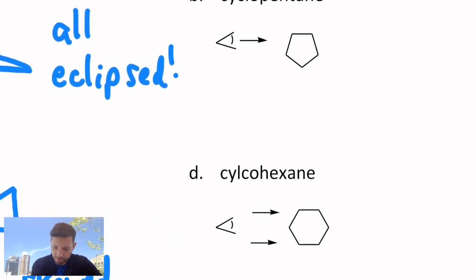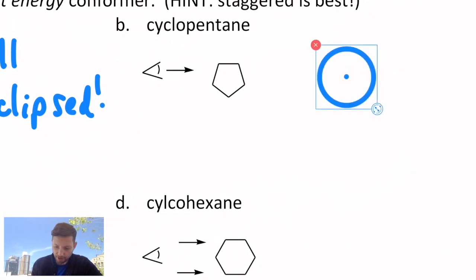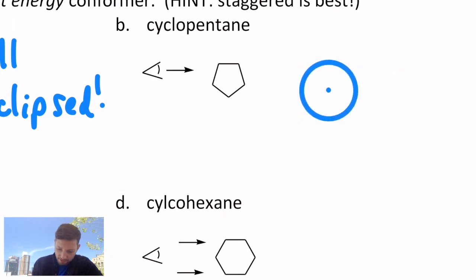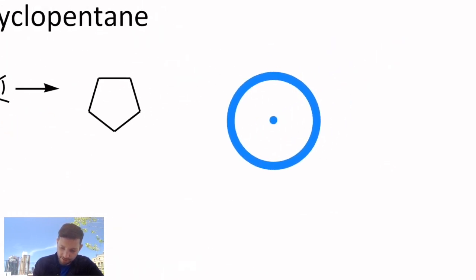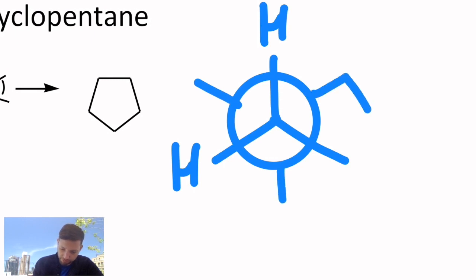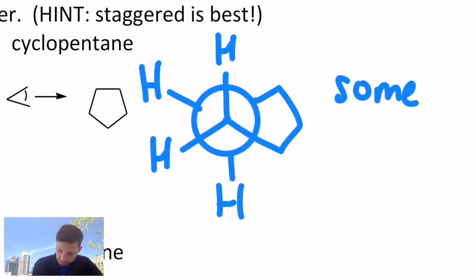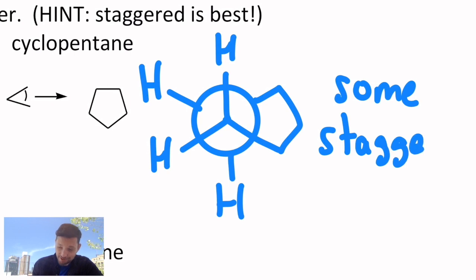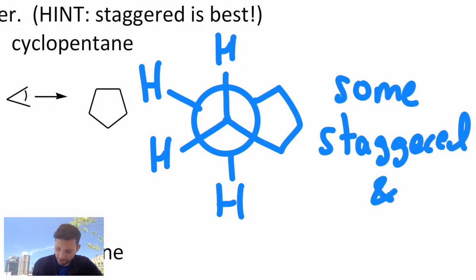The picture got much better with a cyclopentane ring. Now you actually have the possibility of at least one conformation that looks perfectly staggered. If you make a model of this, you'll be able to see that's true — some staggered, however also some eclipsed. We couldn't get everything.